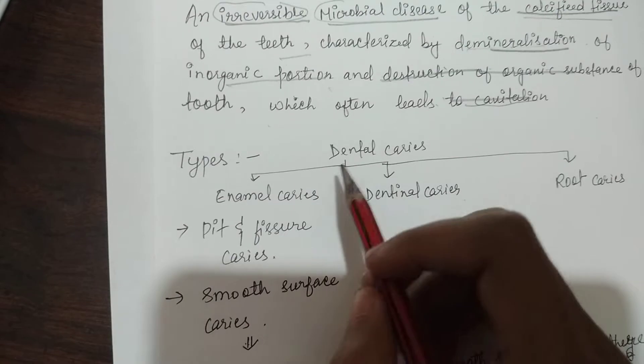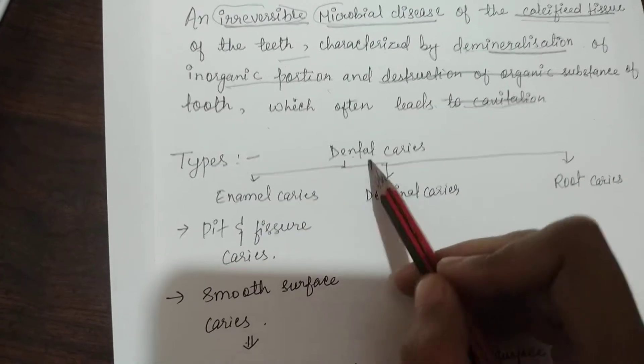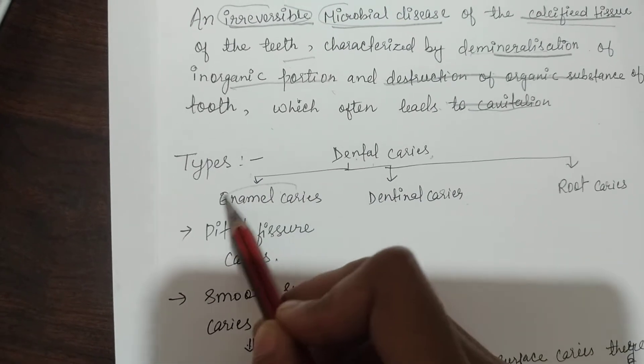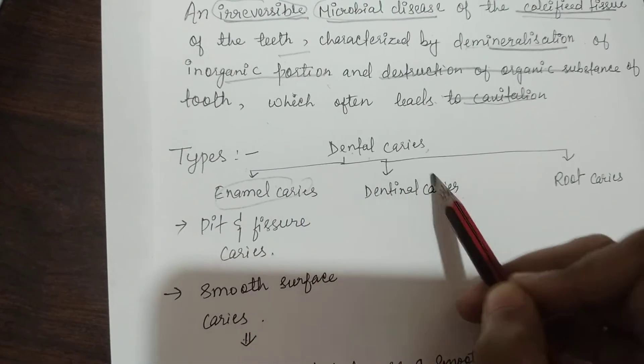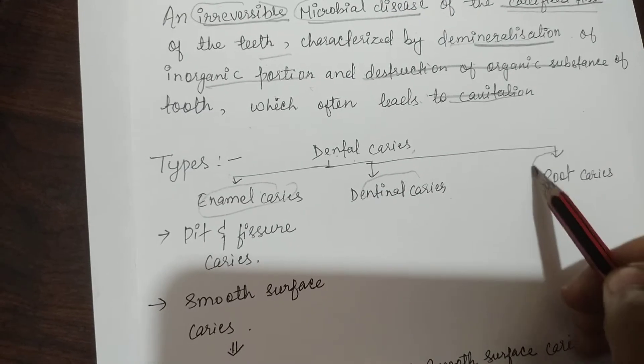Now let's see the types. There are three types of dental caries: first is enamel caries, second is dentinal caries, and third is root caries.